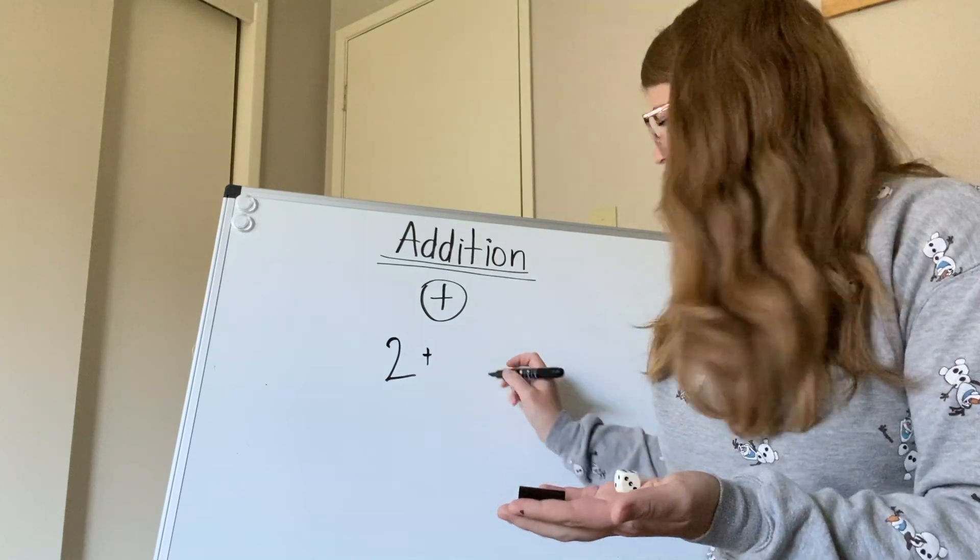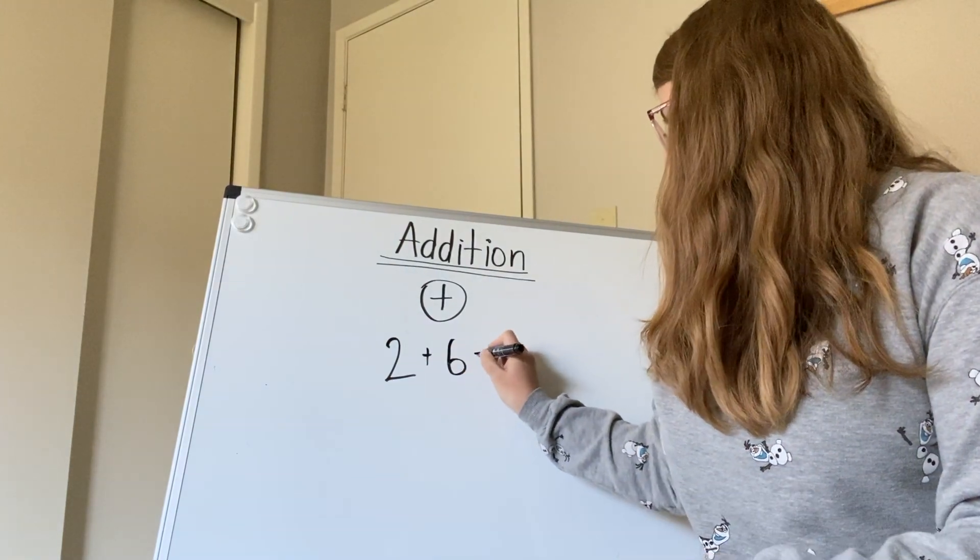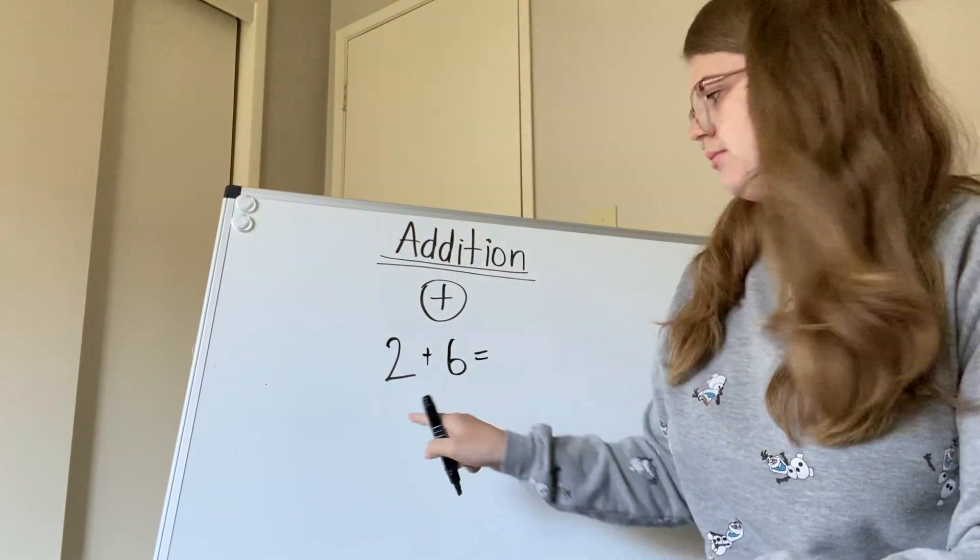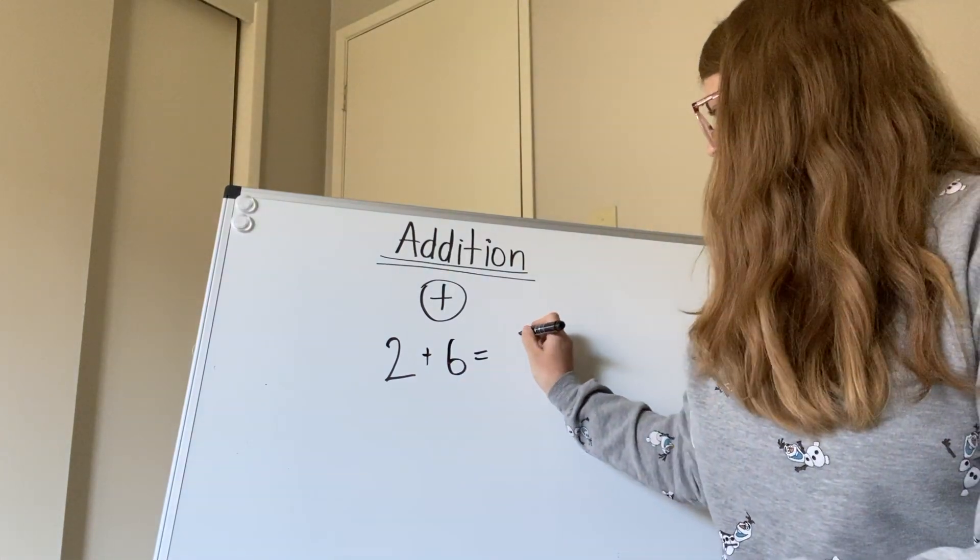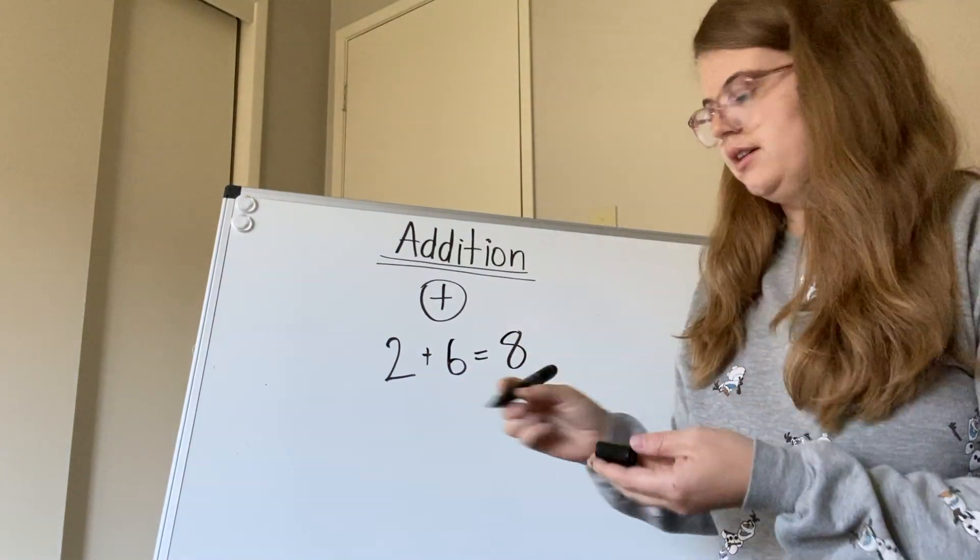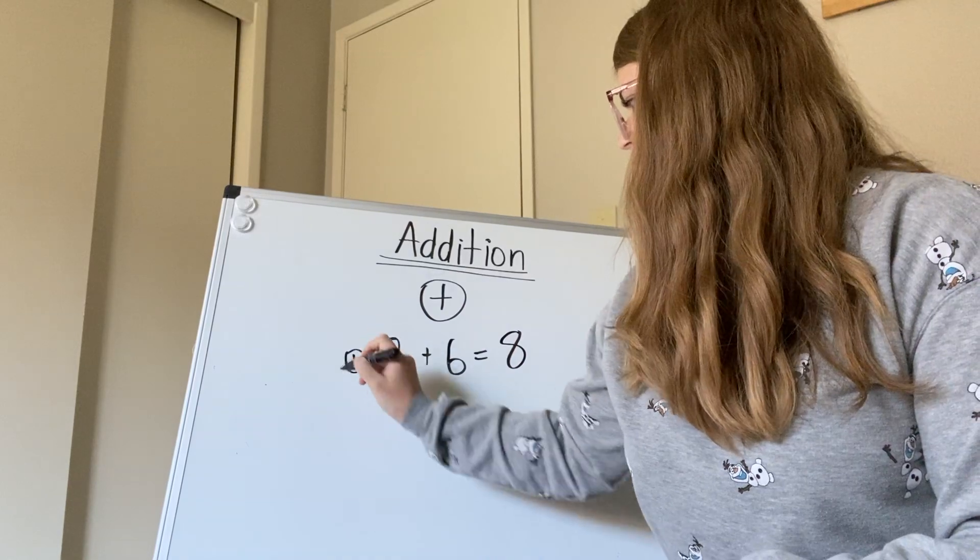So I'm going to say two plus, I'm going to roll it again, I got six. And it's going to be my job to solve the problem. Two plus six equals eight. So that's going to be number one.